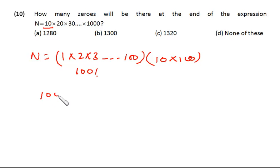So it's 100 by 5, that is 20. Further, there will be extra 5s in 25, 50, 75, and 100. So let's divide 100 by 25, we'll be getting 4 more 5s. So there are total 24 5s.